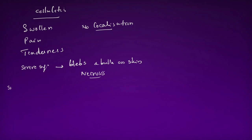The signs of cellulitis include local rise of temperature, swelling, tenderness, pitting edema, and brawny induration. In abscess and cellulitis the signs appear similar, but there will be localization of inflammation in abscess, whereas in cellulitis the inflammation is diffuse.